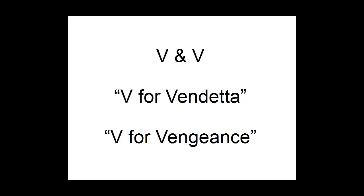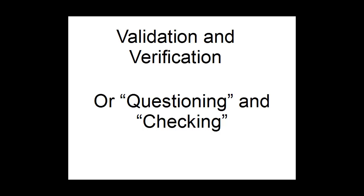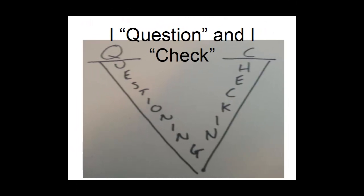Validation was: are we doing the right thing? Verification: did we do it right? We have another model for that — we've got questioning and checking. We question decisions, plans, designs, requirements. Are you sure? Should we do this? Should we do this other thing? How often should we do this? Then as the stuff we're building starts to materialize, we check: did we do what we said? And we continue to ask questions — should we continue this way given what we've just learned? What else did we do that we don't understand the knock-on effect of? So I don't do V and V anymore. I question and check.